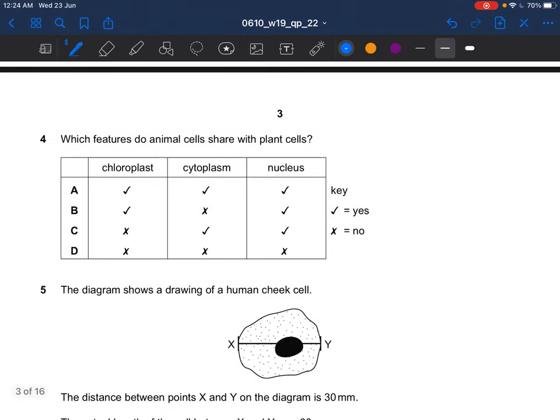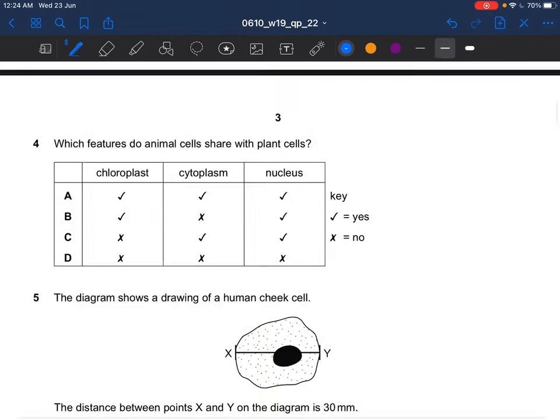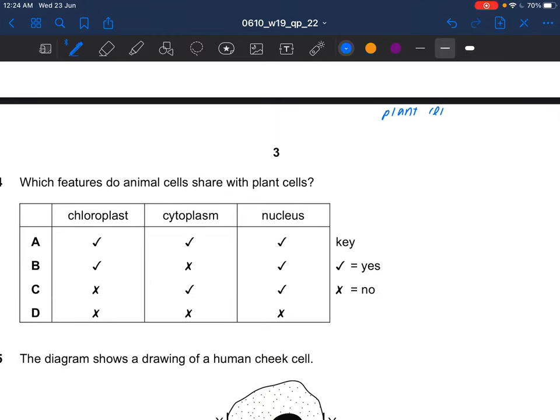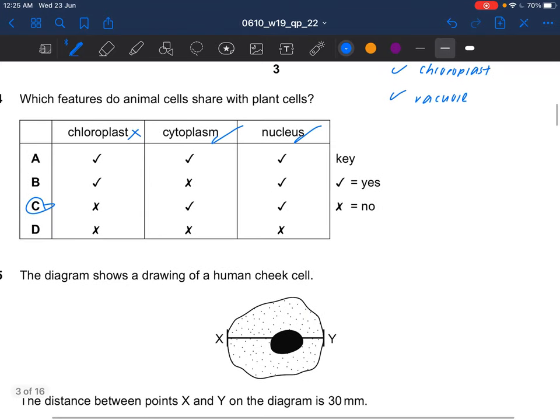Next question, which features do animal cells share with plant cells? Plant cells, unlike animal cells, they have cell wall, chloroplasts, and large permanent vacuole. So animal cells don't have chloroplasts, but both have cytoplasm and nucleus. So the answer would be C. Animal cells and plant cells do have cytoplasm and nucleus.